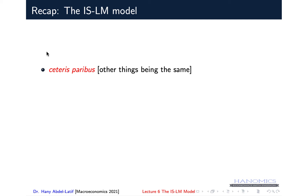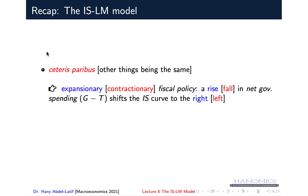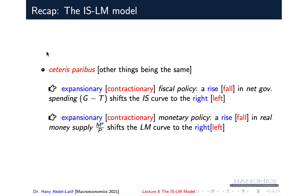We explained what ceteris paribus means — other things being the same. If we assume an expansionary fiscal policy, that means a rise in net government spending (G minus T), which would shift the IS curve to the right. A contractionary fiscal policy implies a fall in G minus T, shifting the IS curve to the left. On the other side, an expansionary monetary policy means a rise in real money supply, which shifts the LM curve to the right, while a contractionary monetary policy implies a fall in real money supply, shifting LM to the left.